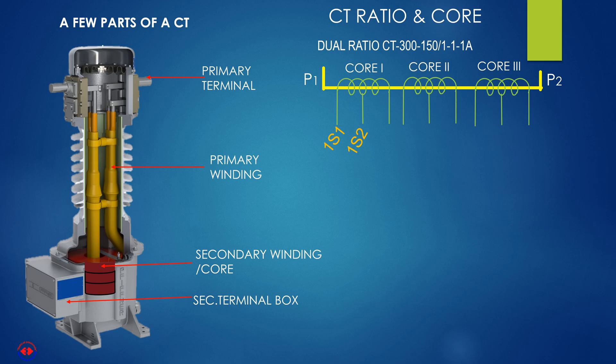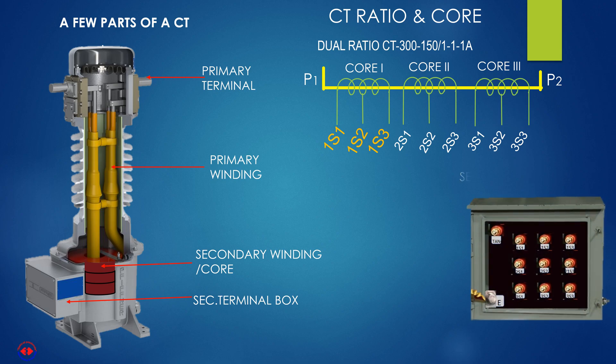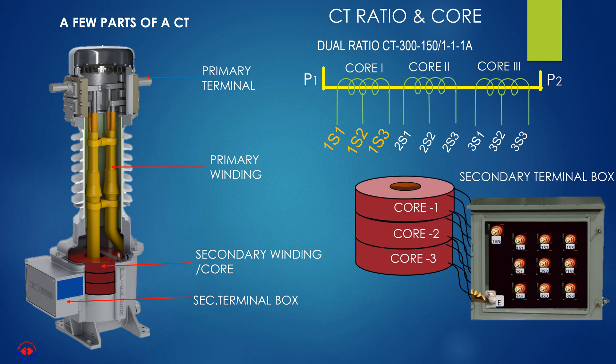And 1s1, 1s2, 1s3, 2s1, 2s2 and 2s3, 3s1, 3s2, 3s3 are its secondary terminals. This is an image of its secondary terminal box. Here terminals are clearly and correctly shown. As it is a dual ratio CT, secondary terminals 1s1 and 1s3 will be used when primary current 300 ampere will be delivered, and 1s1 and 1s2 will be used when primary current 150 ampere. Other terminals are used for same purpose.